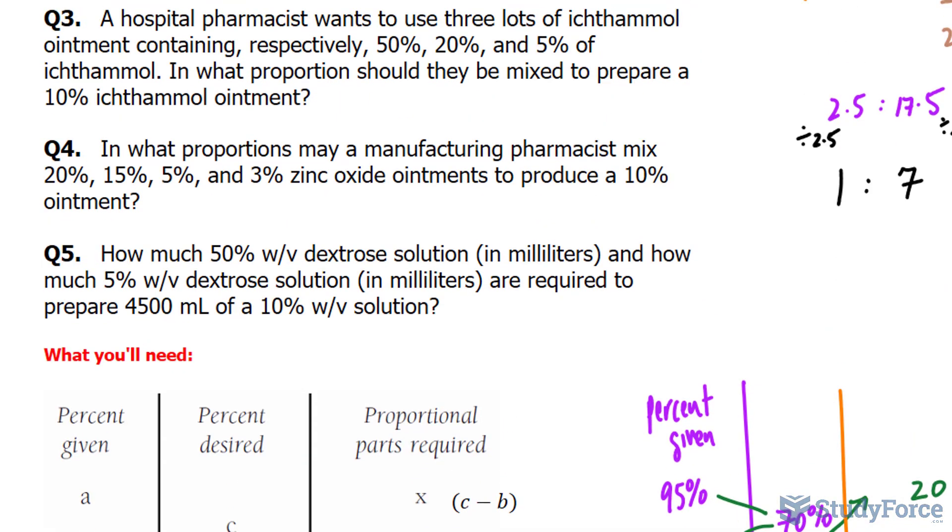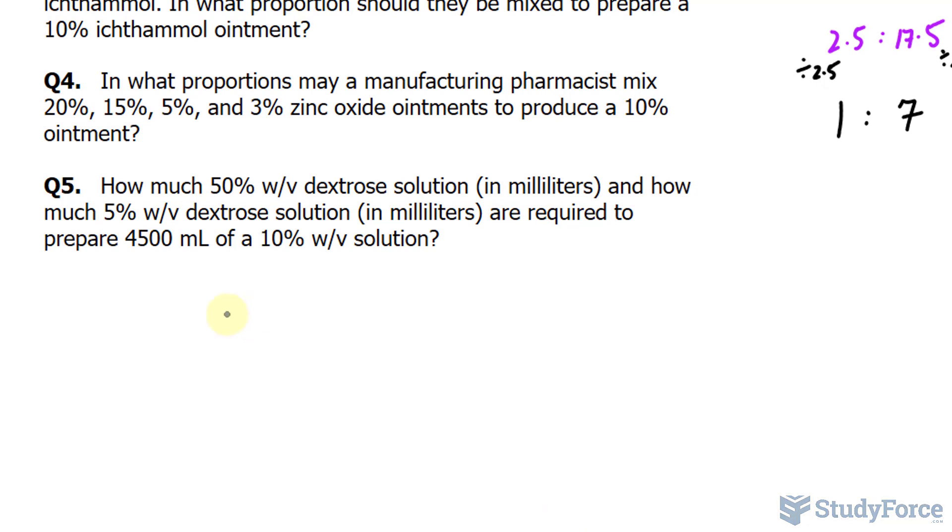In question number 4, in what proportions may a manufacturing pharmacist mix 20%, 15%, 5%, and 3% zinc oxide ointment to produce 10% ointment? So let me just make some space over here. We have 20%, 15%, 5%, and 3%. The desired percent is 10%.